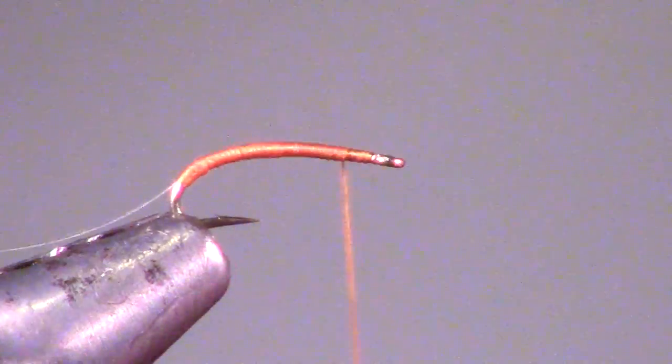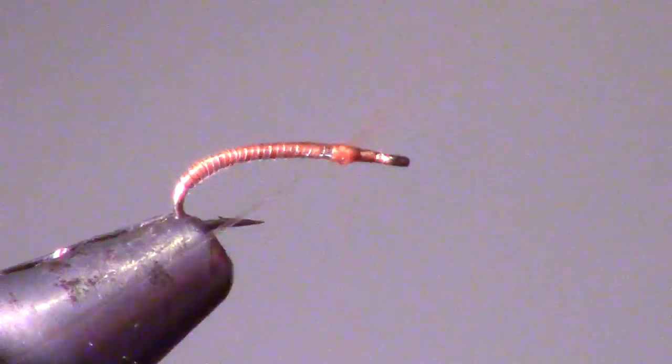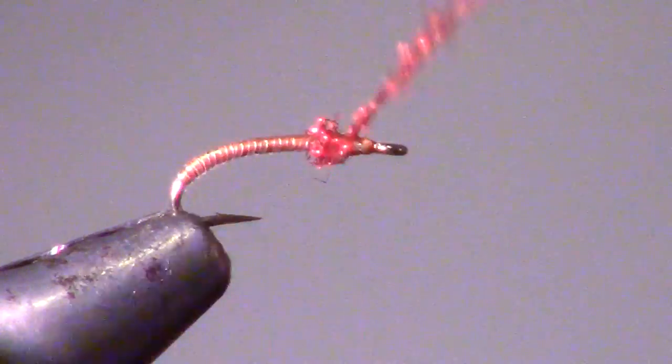For a flashier larvae, try the princess. I am tying this today on a size 20 hook, but common sizes can range from 14 to 24.